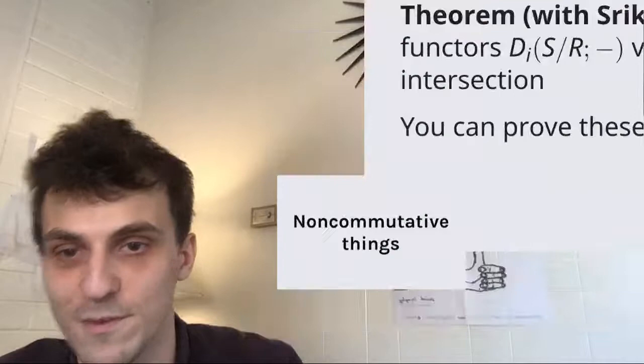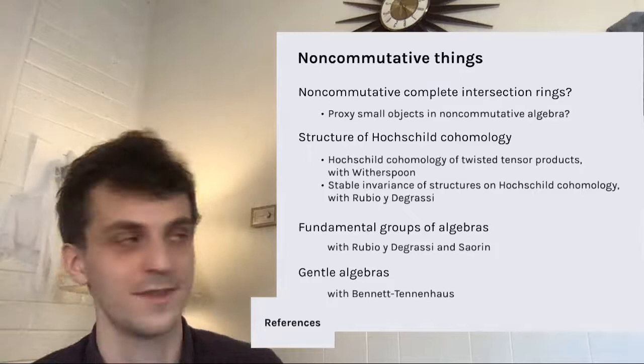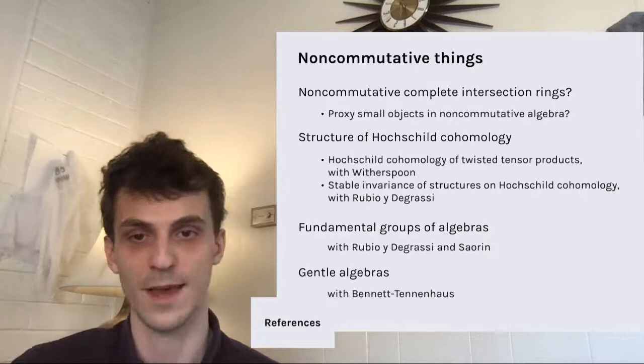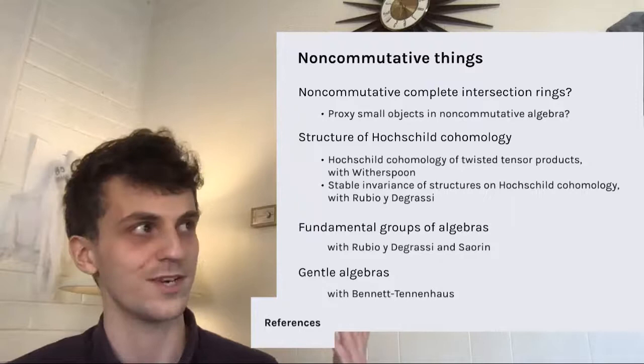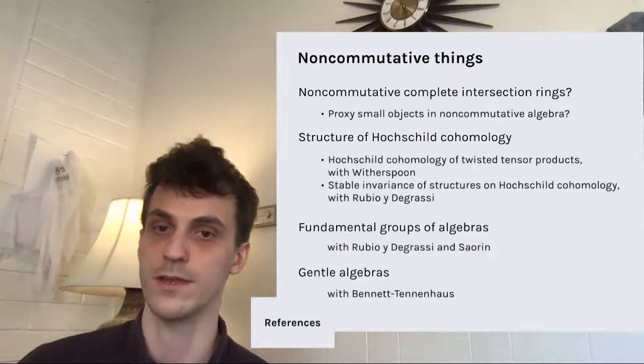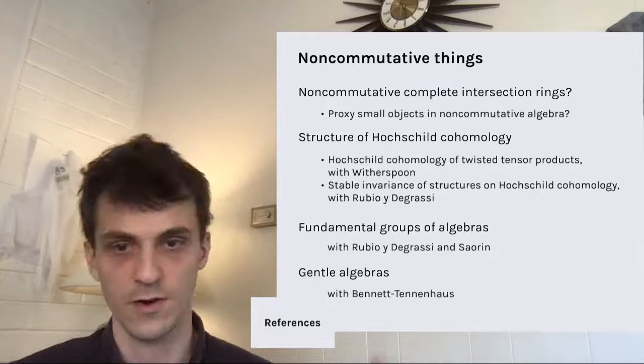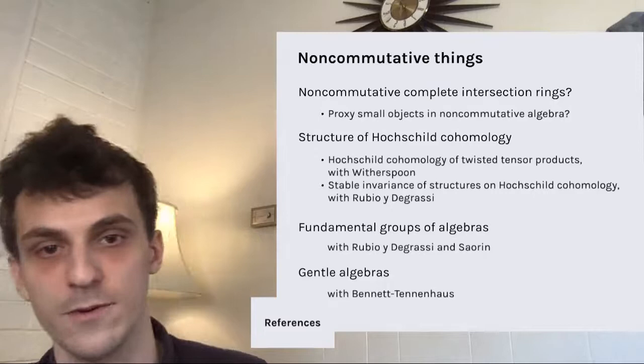In the last few seconds, I'll go over some non-commutative stuff. I'm really interested recently in the idea of a non-commutative complete intersection. Various authors have written about this and there are all kinds of examples, but the general theory is still totally mysterious. There are rings out there which are non-commutative but still display the same kind of homological behavior that commutative complete intersections do. One promising direction is proxy small objects, which haven't really been fully used in non-commutative algebra yet.